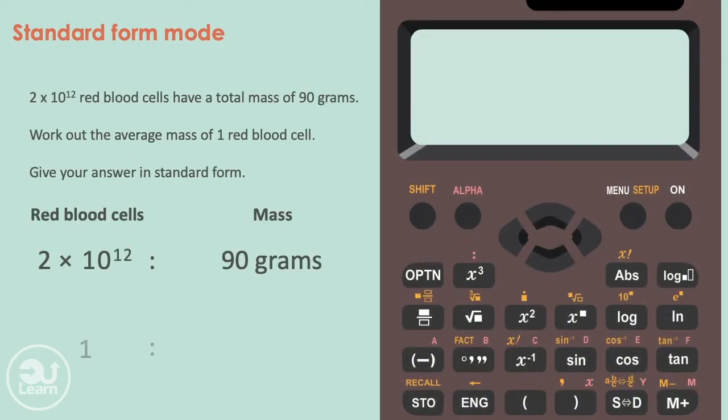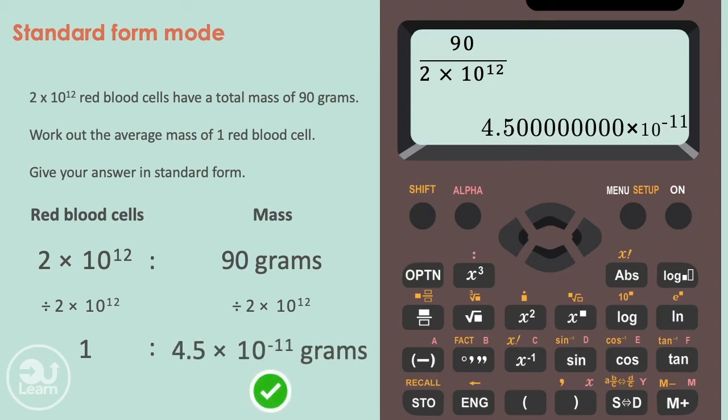To get to one red blood cell, we would have to divide 90 grams by 2 times 10 to the power of 12 red blood cells. Let's type this into our calculator using the fraction button, then we press equals. Since the setting is still in standard form, the answer is presented in standard form. This is our final answer.